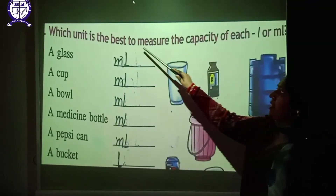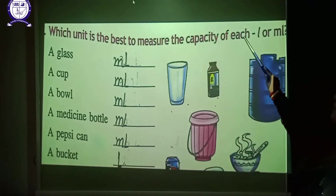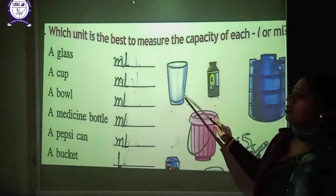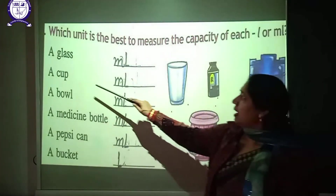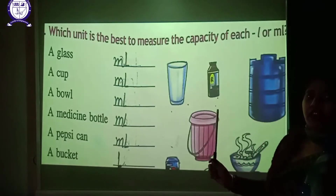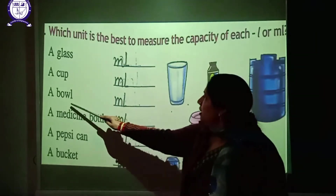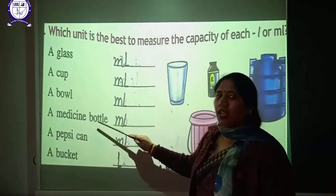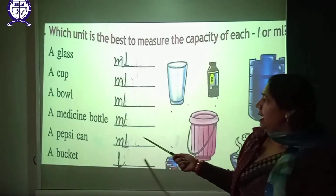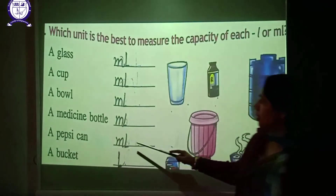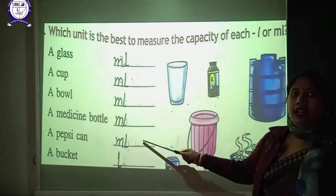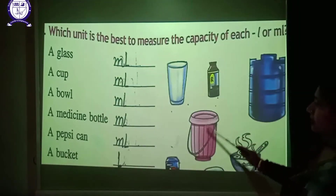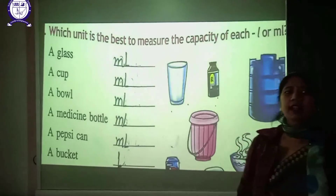Which unit — litre or millilitre — is best to measure capacity? A glass is about 200 mL, a cup about 100–150 mL, a bowl about 200 mL, a medicine bottle about 50–100 mL, a tin can about 200–250 mL, and a bucket holds about 50 litres.